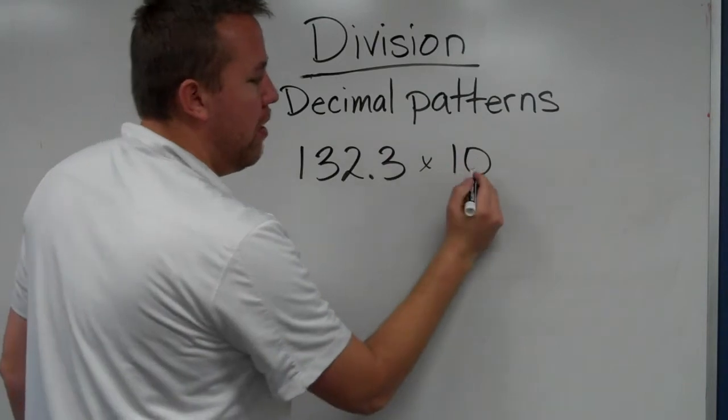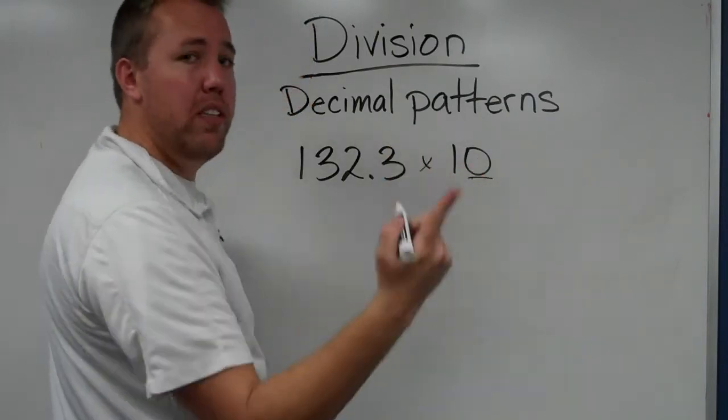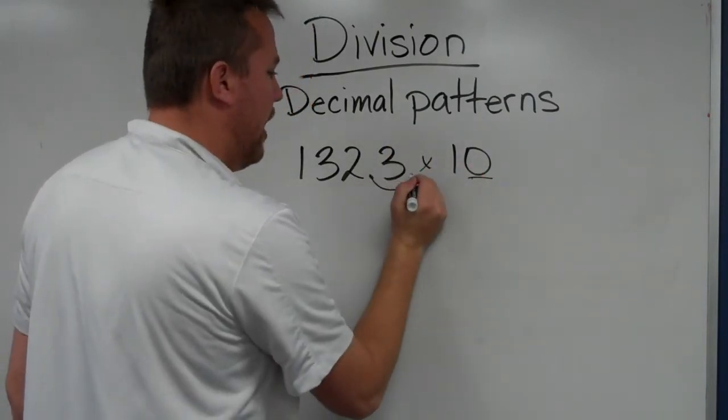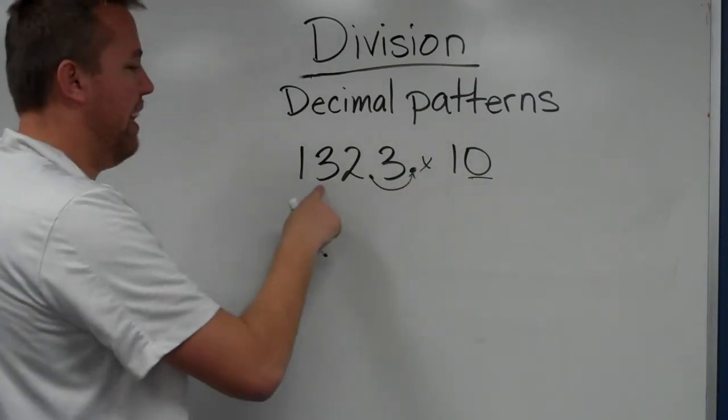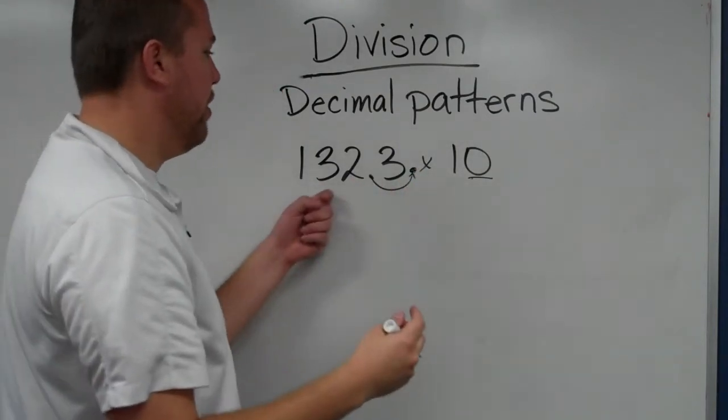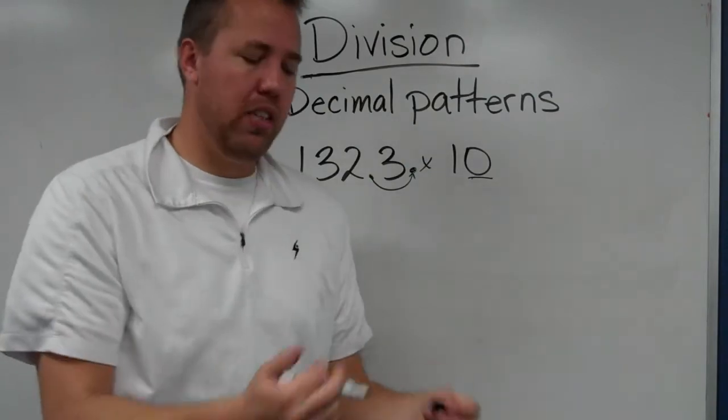So we would just move it times ten, that means one place value, and we would just move it one time. And 1,323 is 132.3 times ten.